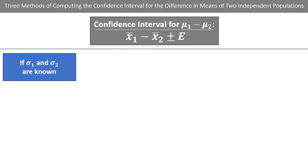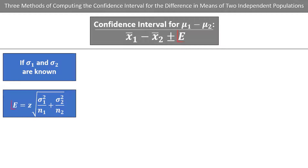If the population standard deviation is known for both populations, the error equals z times the square root of sigma1 squared over n1 plus sigma2 squared over n2. In the real world, this situation is very unlikely, as the population standard deviations are almost never known.